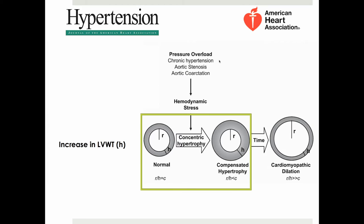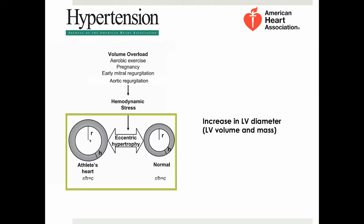Pressure overload, such as in chronic hypertension, aortic stenosis or coarctation, results primarily in an increase in ventricular wall thickness. In volume overload, the predominant morphological change is an increase in LV diameter. Volume overload is physiologically encountered in exercise or pregnancy and pathologically in regurgitant valvular disease.